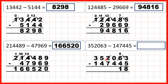So again go to the left, one less, one in front — 10 minus 4 is 6. We can't do 1 minus 7, so go to the left, one less, one in front — 11 minus 7 is 4. Then 4 minus 4 is 0, and 3 minus 1 is 2, so that gives us our answer: 204,618.